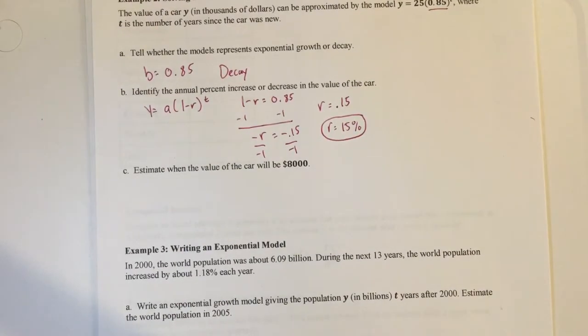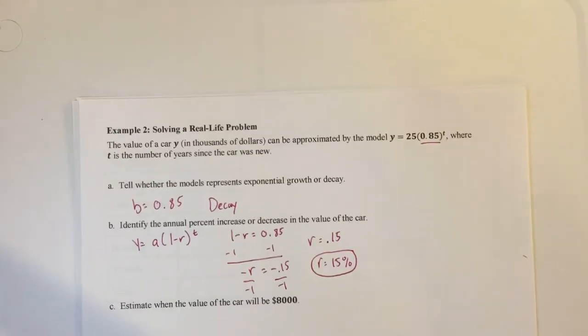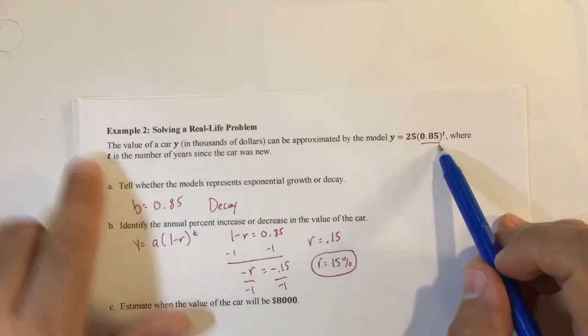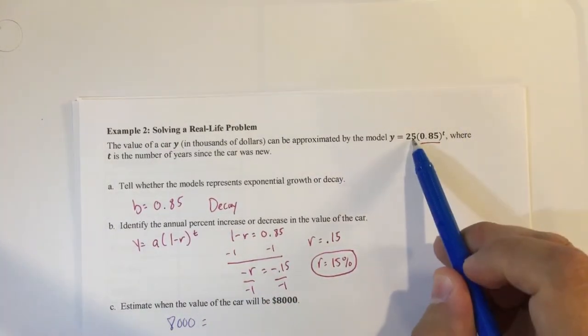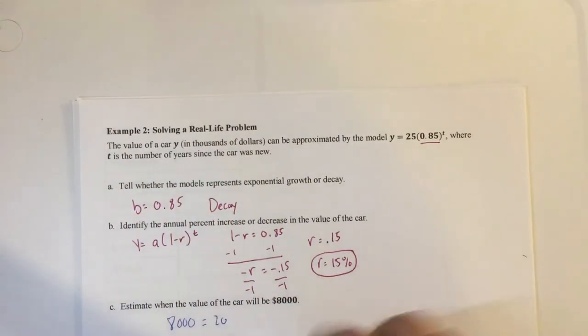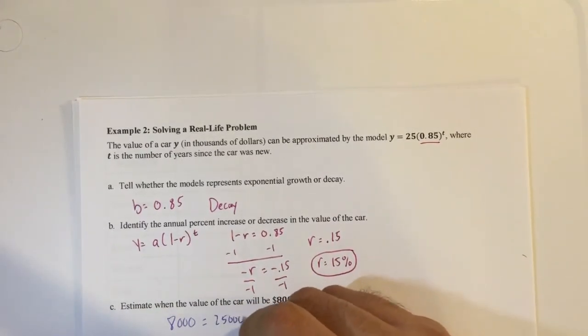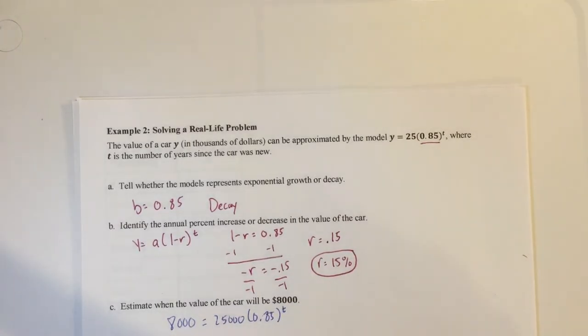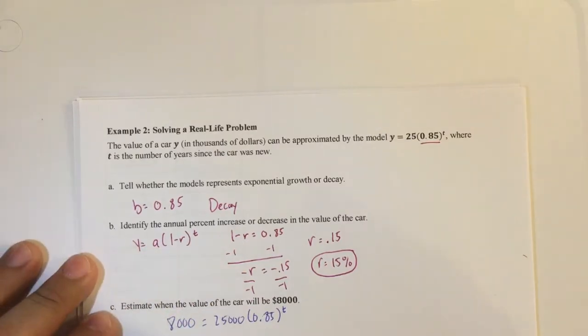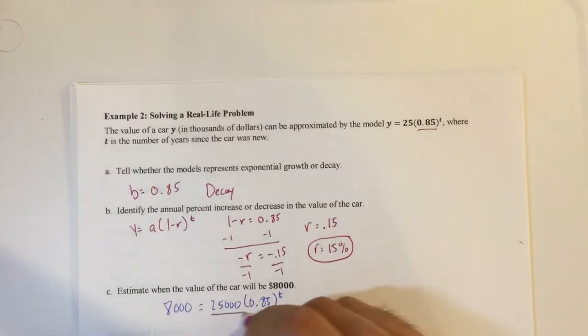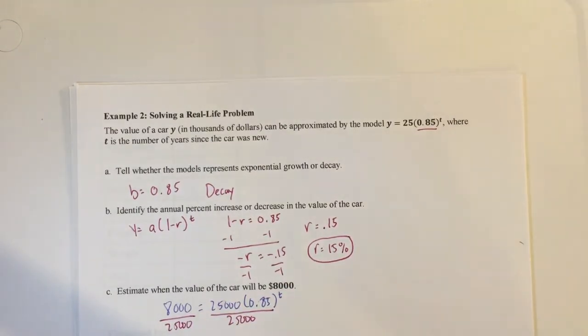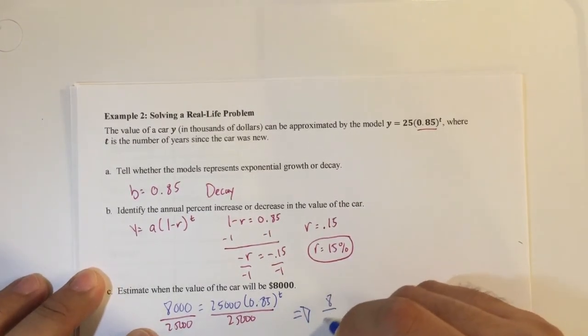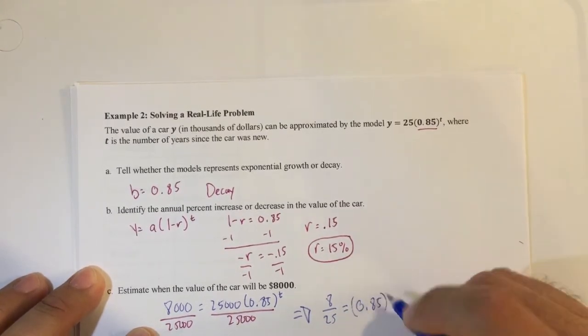Alright, part c says estimate when the value of the car will be $8,000. So what we're going to do here is we're going to take $8,000, and we're going to substitute it into this problem where it should go. So here, y equals this whole thing, $8,000. So the value of a car y can be approximated. So $8,000 equals, in this case, this is not a 25, it's $25,000. So $8,000 equals $25,000 parentheses 0.85 raised to the t power. From here, I'm going to divide both sides by $25,000. And let's just reduce this real quick. So this will become 8 over 25 equals 0.85 raised to the t power.